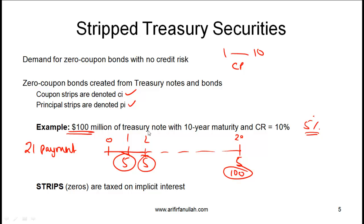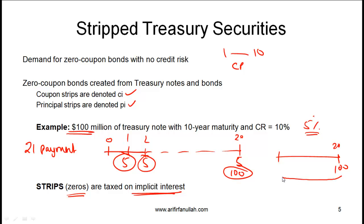Hopefully you now understand what treasury STRIPS are. A tangential point: treasury STRIPS, also called zeros, are taxed on implicit interest. That means if you invest in a 10-year zero coupon strip, you will receive $100 million after 10 years but you receive no cash flow during those 10 years. However, every year there is a gain in the value of your investment and that gain is taxed. So even though you are not receiving cash flow from this security, you still have to pay tax — which is considered a negative factor.